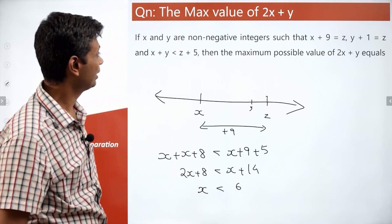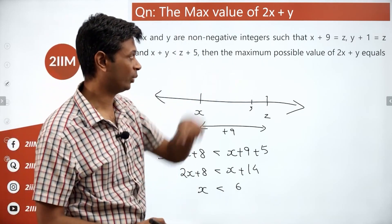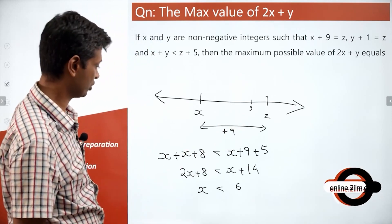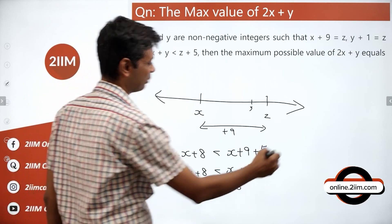Lovely. The maximum possible value of 2x plus y, higher x is higher y will be. We know that they are non-negative integers, x is less than 6, so x can be 5.